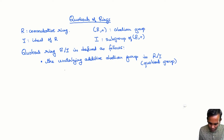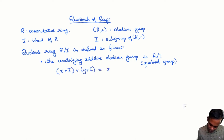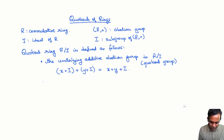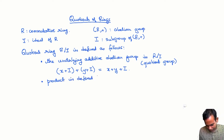An element of R mod I is of the form X + I, that is X plus the set of all elements that can be written as X plus an element of I. This is a coset of I. We define the sum of two cosets: (X + I) + (Y + I) = (X + Y) + I, following the rule for taking quotients of groups.